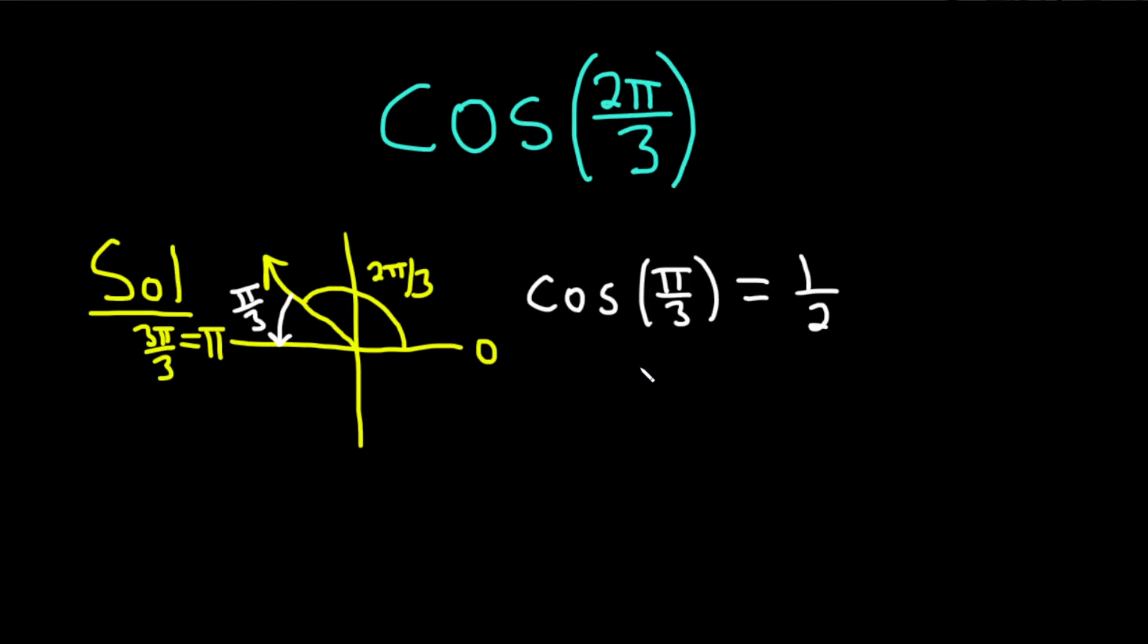Now here's the key fact. The trig function values of an angle and its reference angle are the same, except for possibly a sign change. So the cosine of 2π over 3, it's going to be either 1 half or it's going to be negative 1 half. So once you get to this step, you're almost done. You just have to check for the sign. Is it going to stay the same, or are you going to put a negative sign?